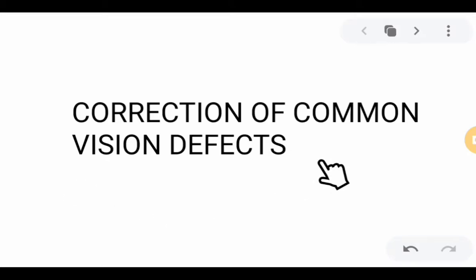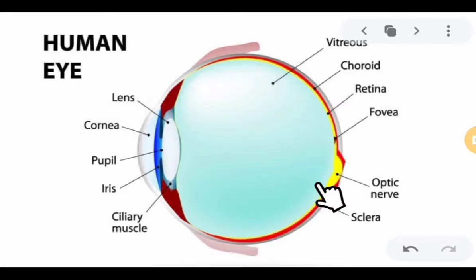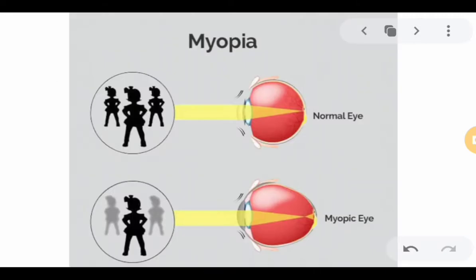Hello everyone. This lecture video is all about the correction of common vision defects. As a person grows older, the eye ciliary muscle, which holds and assists the opening of the lenses, becomes weaker. Consequently, the power of accommodation typically decreases and the person suffers from vision defects. We will be discussing the different visual defects and how to correct them.